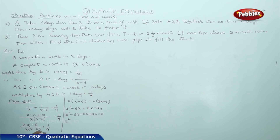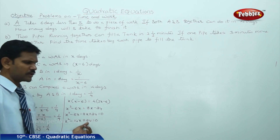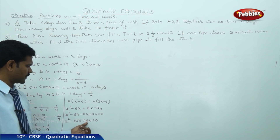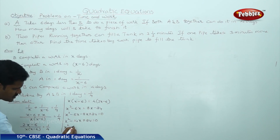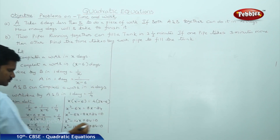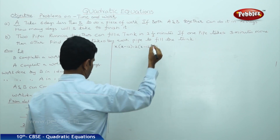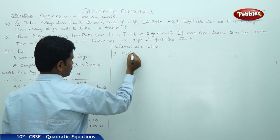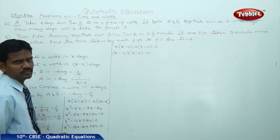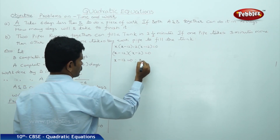We need to find out the factors of 24 such that after addition we get 14. That is, X squared minus 12X minus 2X plus 24 is equal to 0. Taking X common: X into X minus 12 minus 2 into X minus 12 equals 0. Therefore X minus 12 equals 0 or X minus 2 equals 0.